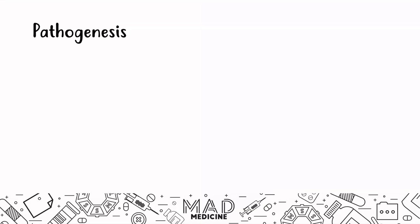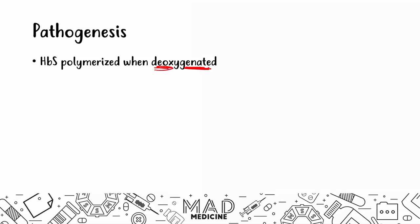Let's talk about the pathogenesis. Hemoglobin S polymerizes in its deoxygenated form — it polymerizes when oxygen is lost. This happens in times of low oxygen, high altitude, or acidosis.